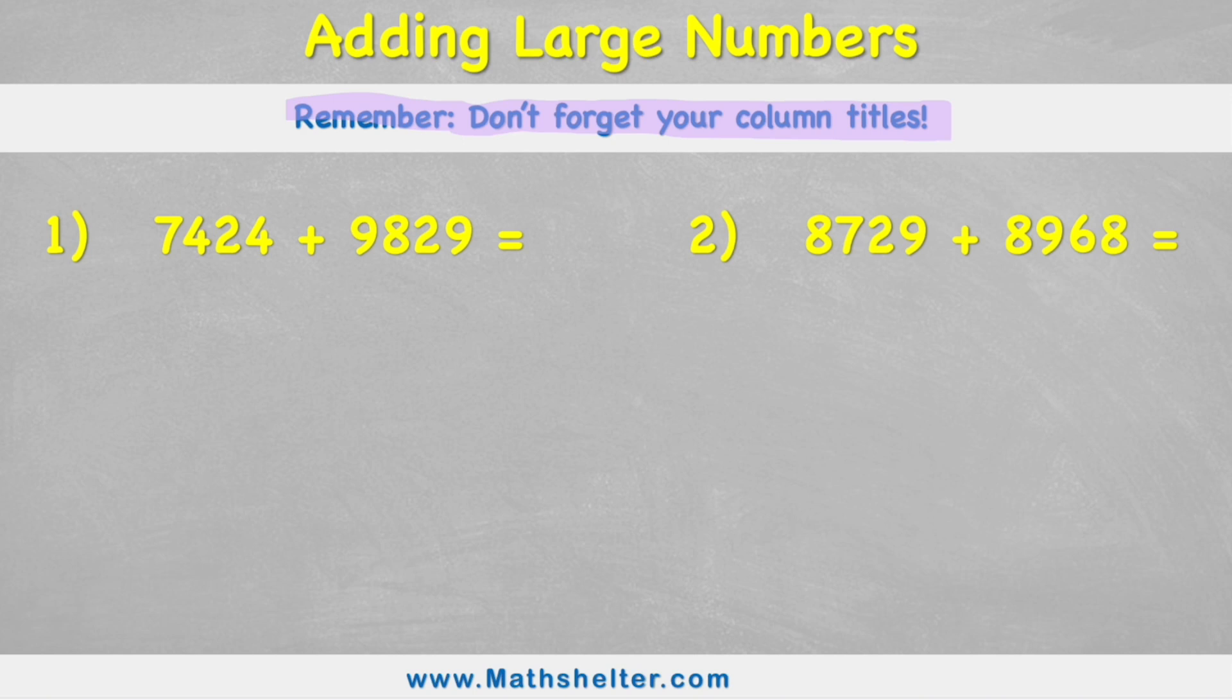Okay, so let's look at example number one. We have 7,424 and 9,829. Okay, so let's first of all put some column titles in place.